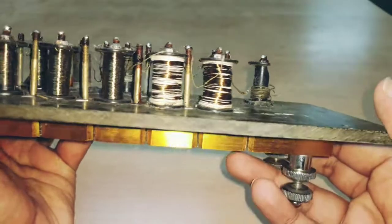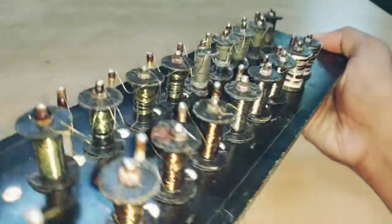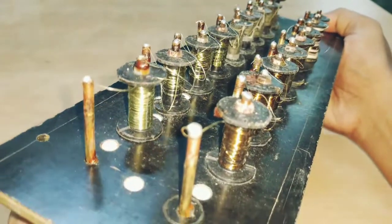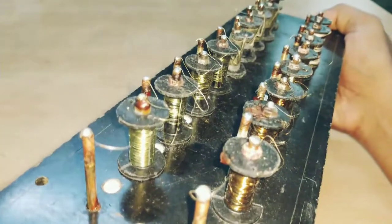So this is all that you have inside a resistance box: basically different coils of wires.